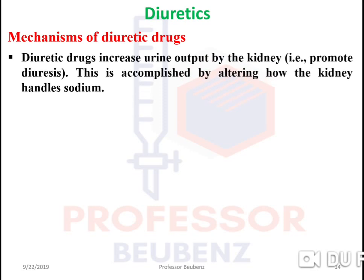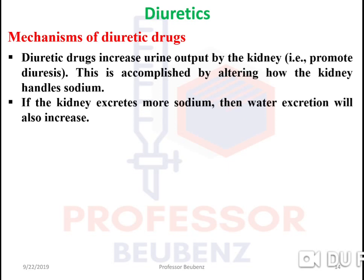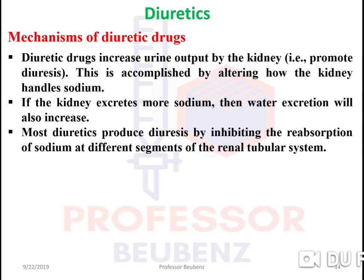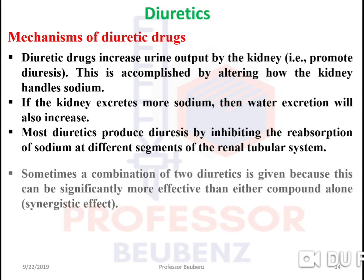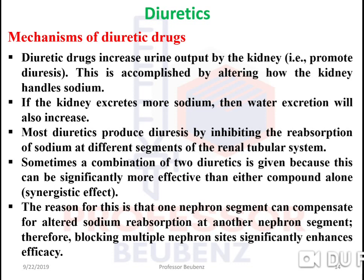Moving forward to diuretics: diuretics are drugs that increase urine output by the kidney, promoting diuresis, by altering how the kidney handles sodium. If the kidney excretes more sodium, water excretion also increases. Most diuretics produce diuresis by inhibiting the reabsorption of sodium at different segments of the renal tubular system. Sometimes a combination of two diuretics is given for a synergistic effect, because one nephron segment can compensate for altered sodium reabsorption at another segment, so blocking multiple nephron sites significantly enhances efficacy.